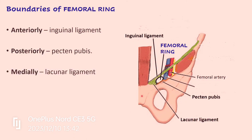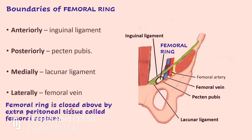The medial boundary is formed by the lacunar ligament — a triangular ligament — and laterally we have the fibrous septa of the femoral sheath separating it from the femoral vein. The femoral ring is closed above by extraperitoneal loose areolar tissue which forms the femoral septum. This loose connective tissue will not stop the passage of lymphatics because it is so loosely arranged.